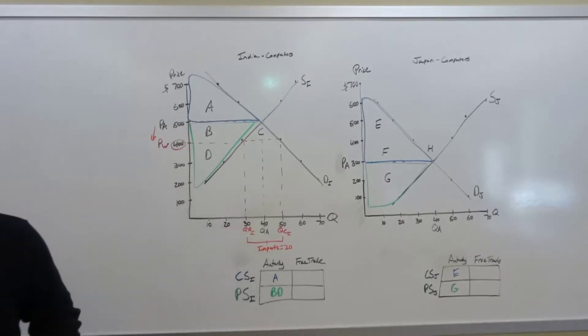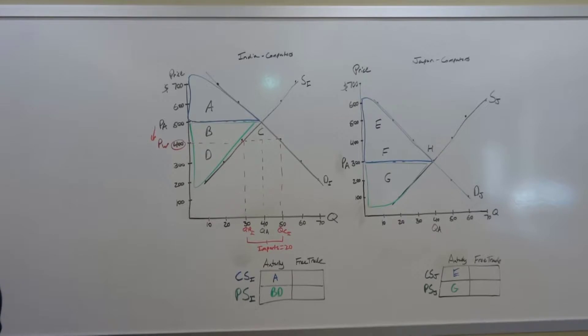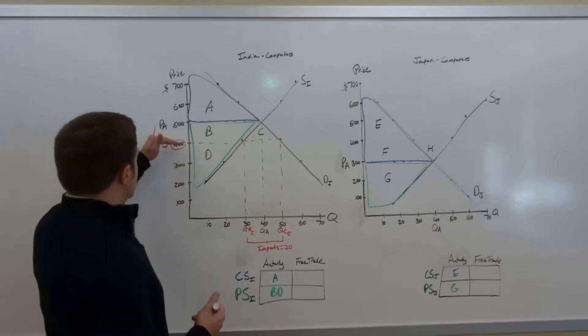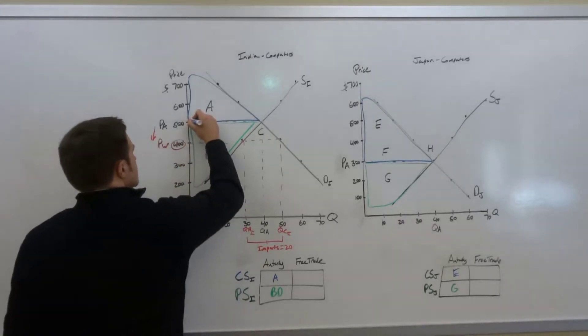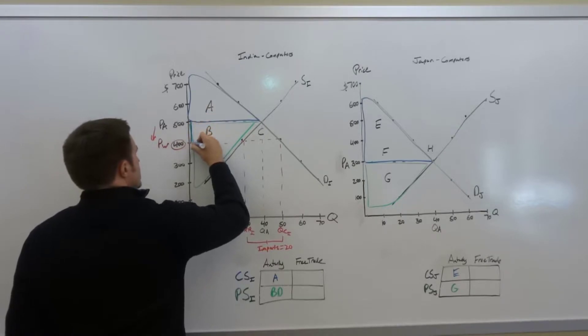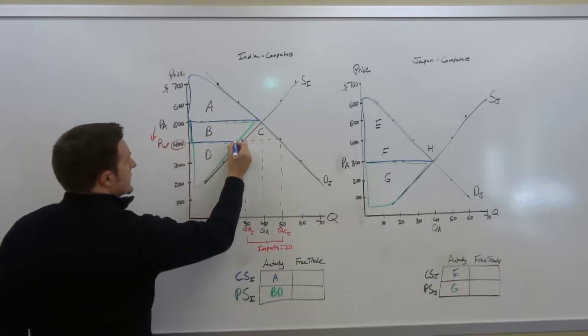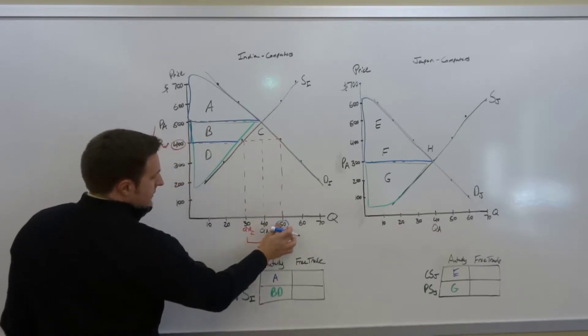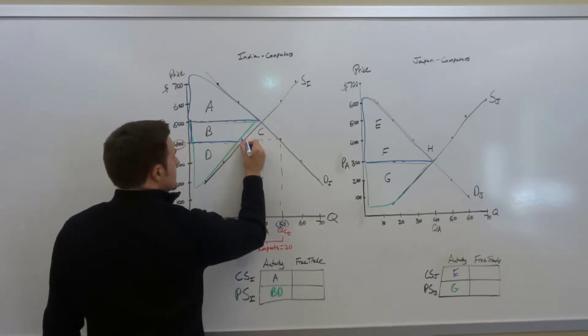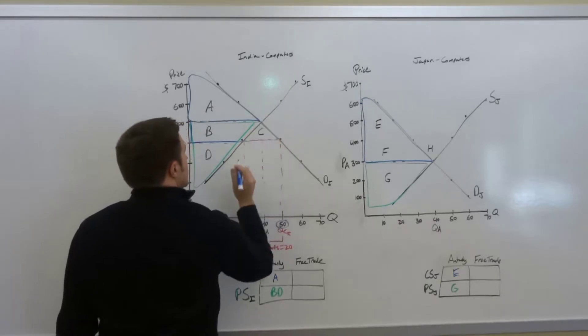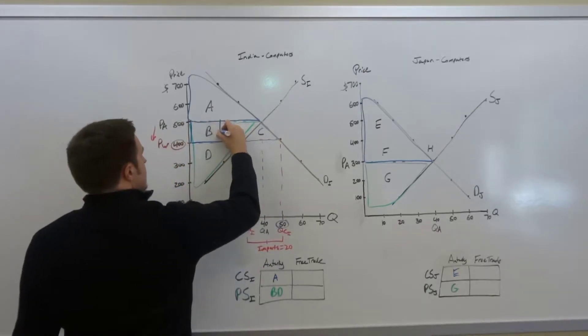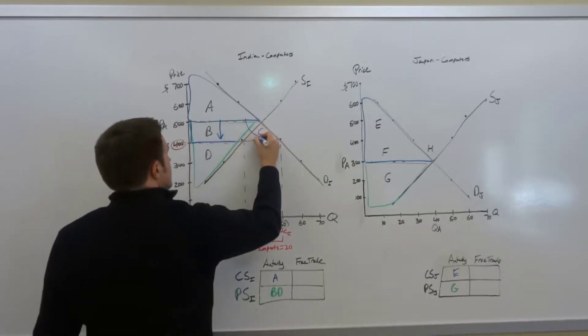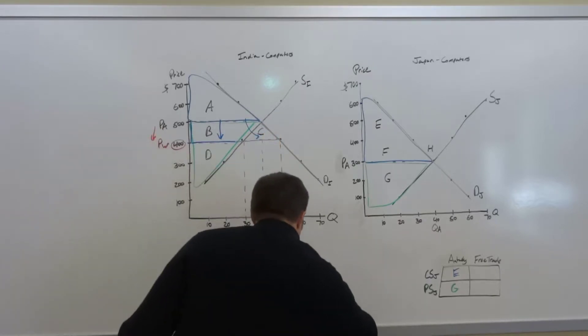Now at this slightly lower price, everything above the price is now a part of consumer surplus. So the consumer surplus gets bigger all the way down to 400, but it also now extends all the way out to 50 units which are consumed. So the new consumer surplus is going to be areas A, B, and C.